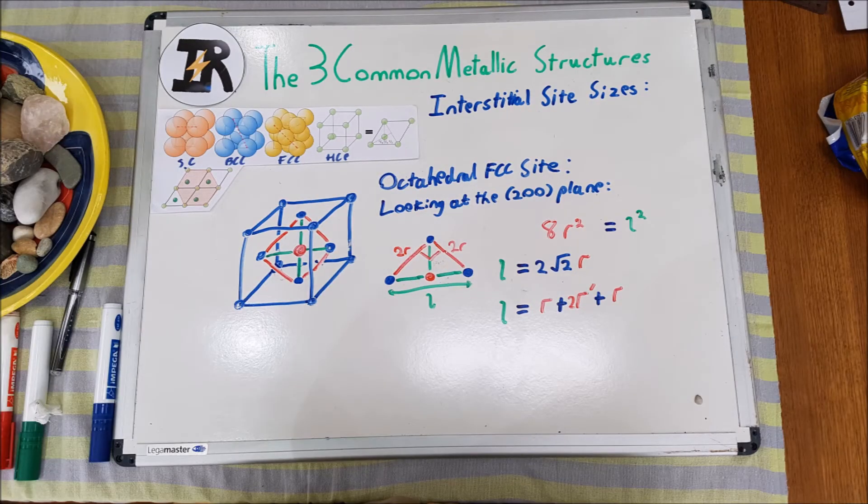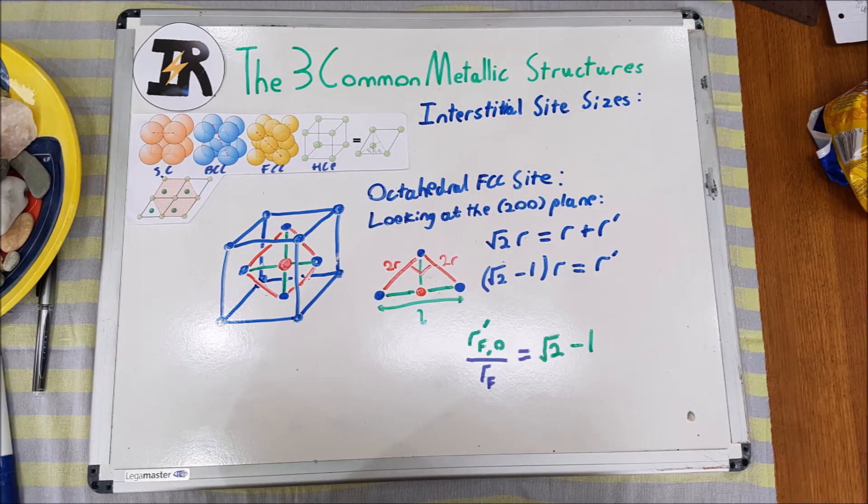Looking back at the non-reduced diagram again, focusing on the FCC octahedral interstitial site, it can be seen that the length L is also equal to 2R + 2R', where the radius of the interstitial hole is equal to R'. Equating the two equations of L, we obtain an equation in terms of just R and R'. Thus, we can obtain the ratio of the FCC octahedral hole radius to the radius of the FCC matrix atoms, this value being √2 - 1.